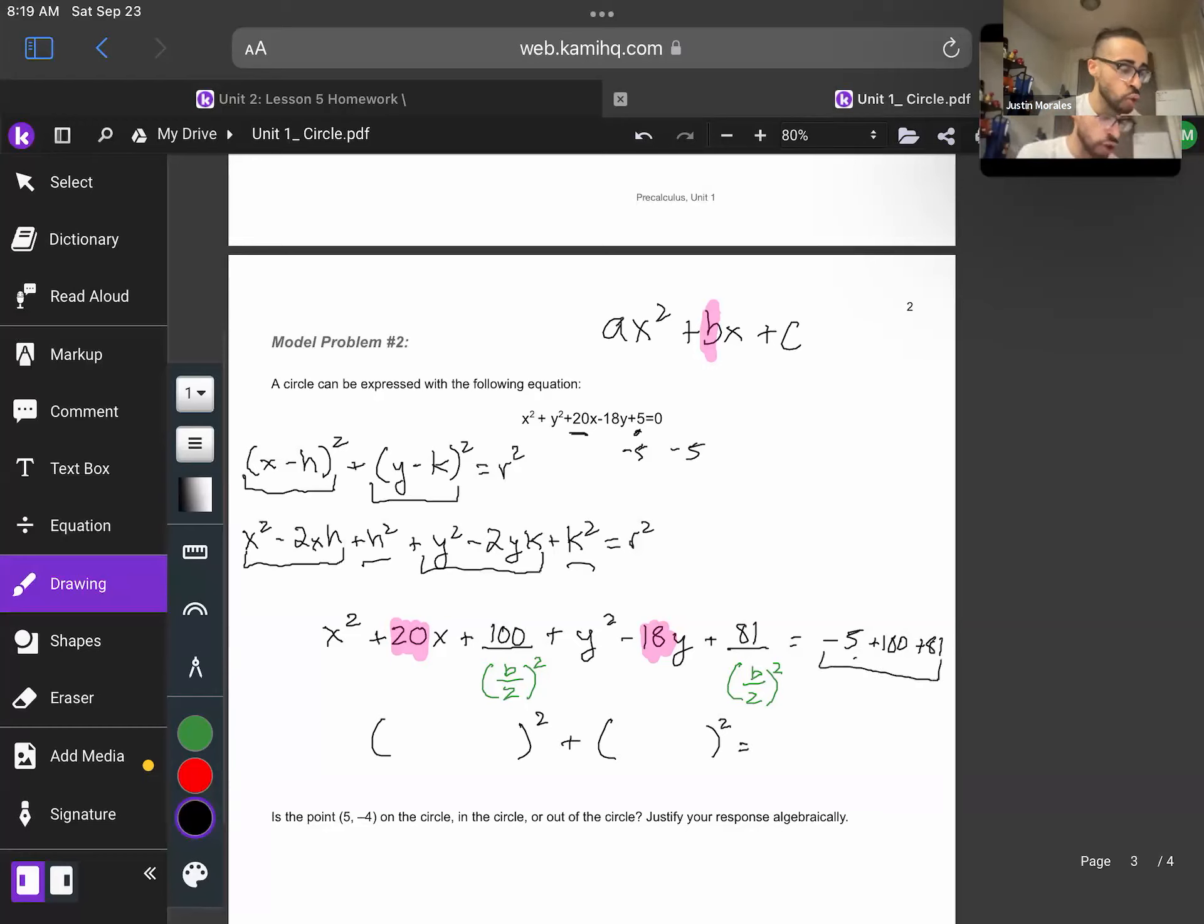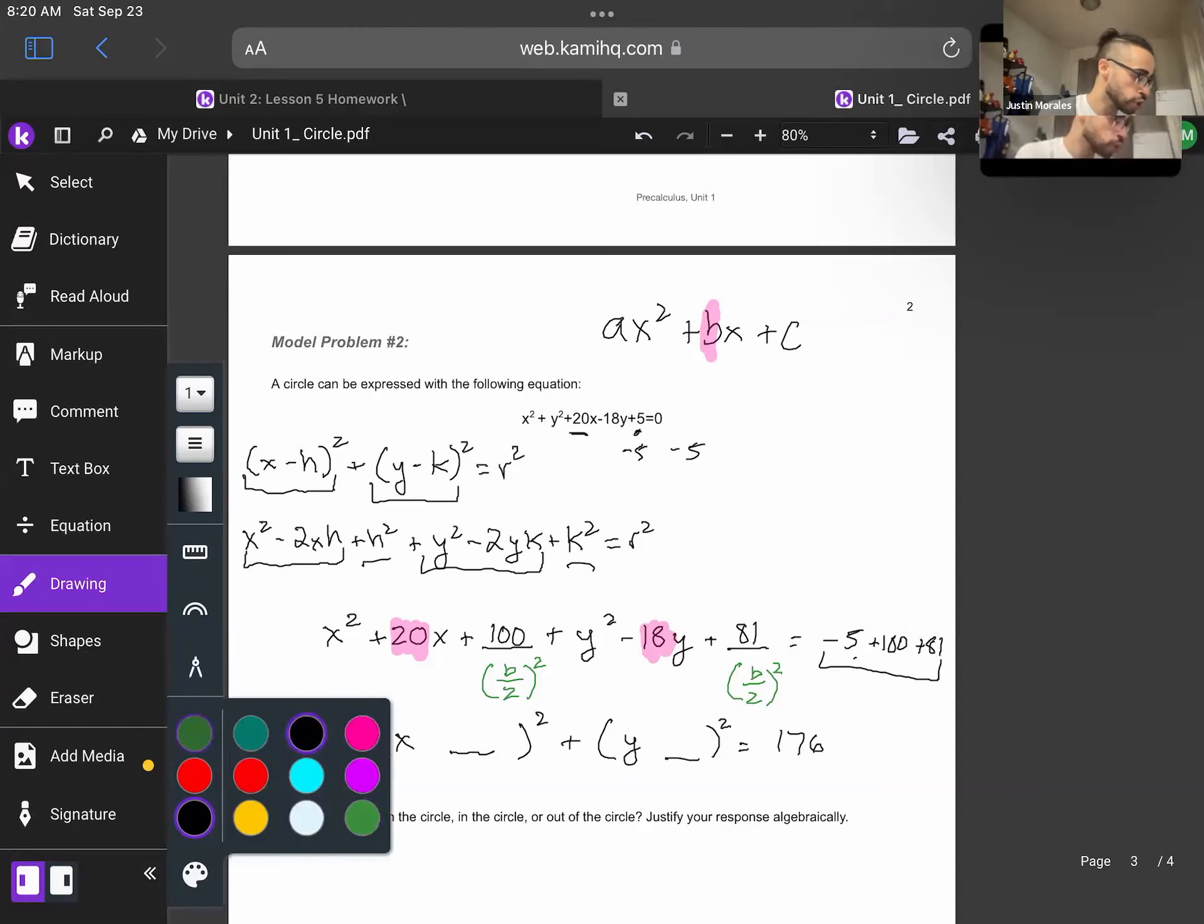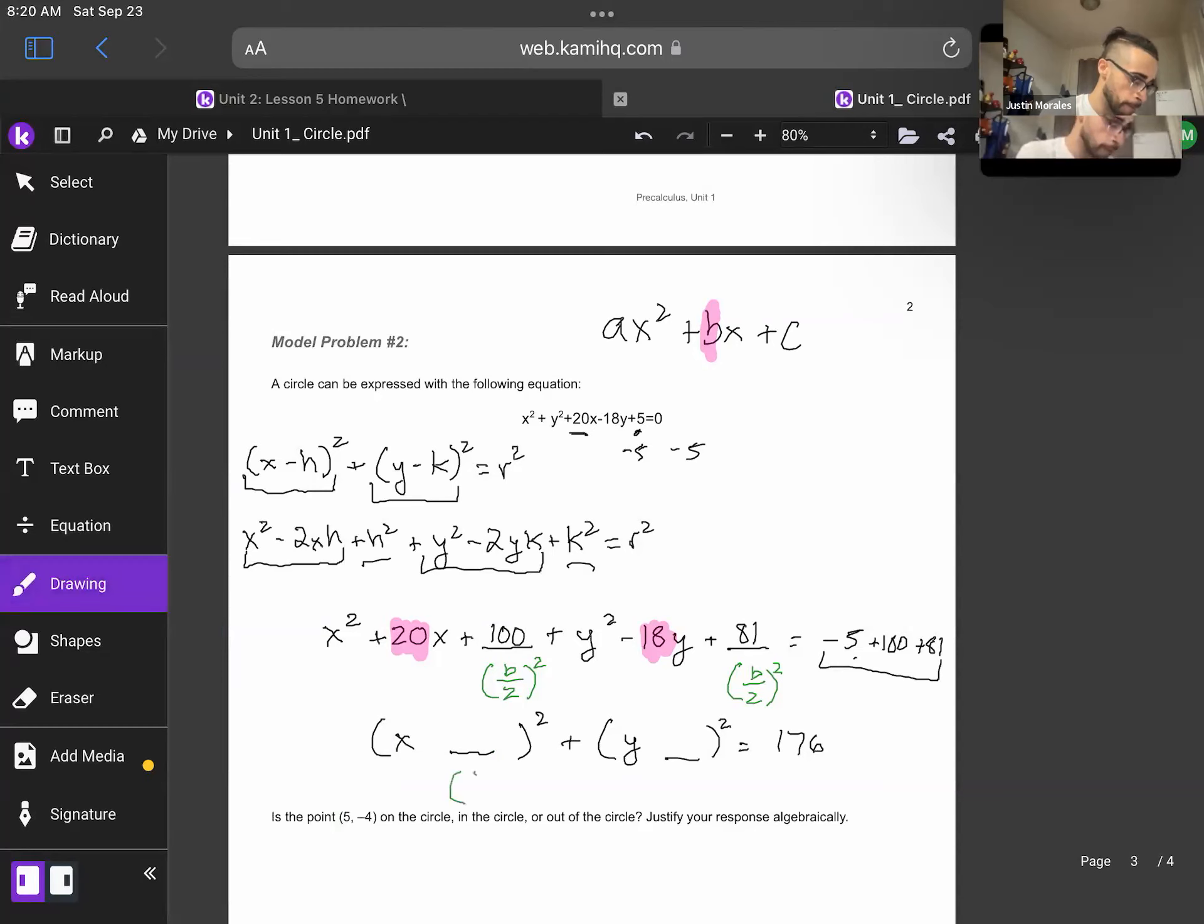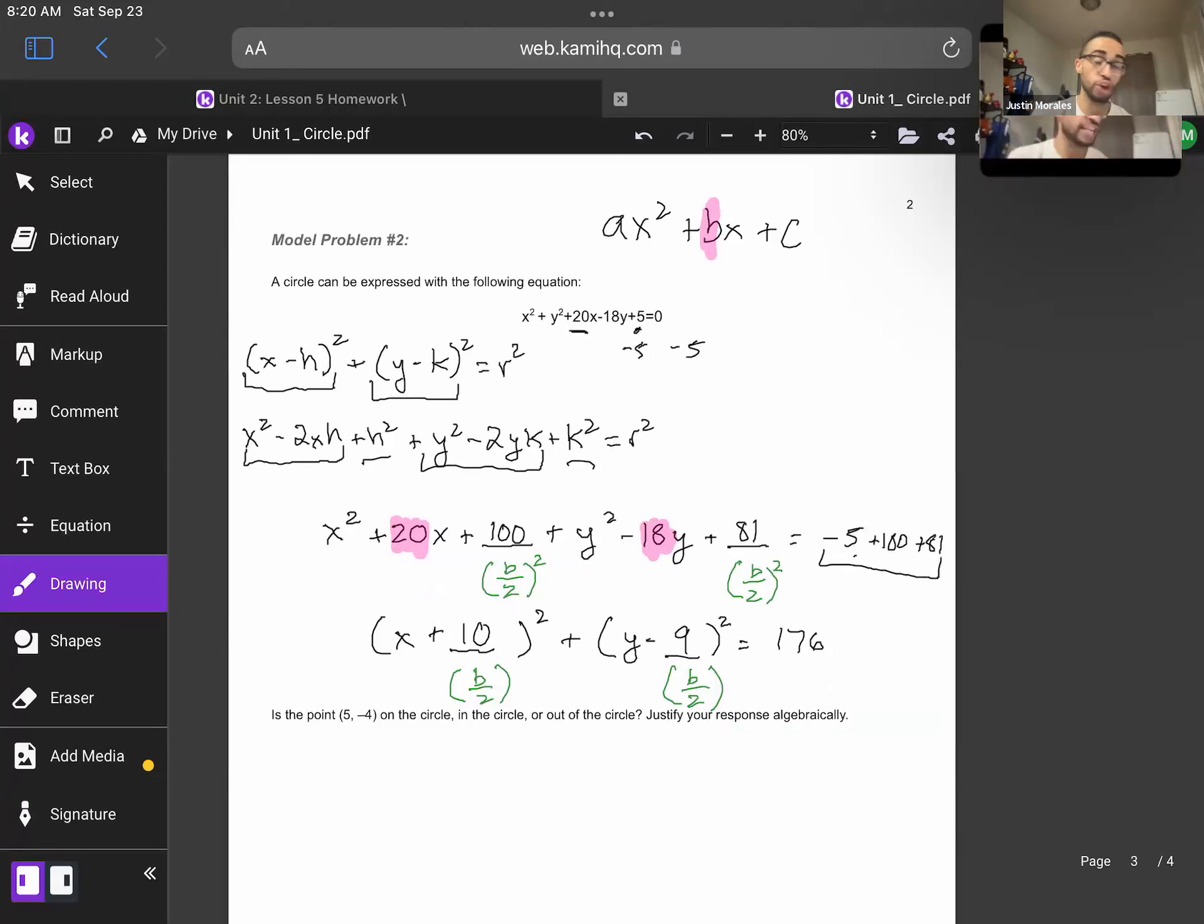And real quick, I'm just going to add all this up together. 100 plus 81 is 181. 181 minus 5 is 176. So we're going to have our x here and our y here. So now what goes in this blank? So now we're going to just utilize doing b divided by 2. So once again, that b values are still going to be the same. So we're going to do 20 divided by 2, and that's going to be +10. Then we're going to do -18 divided by 2, and that's going to be -9. And boom, we got it into the equation of a circle that we're accustomed to seeing.